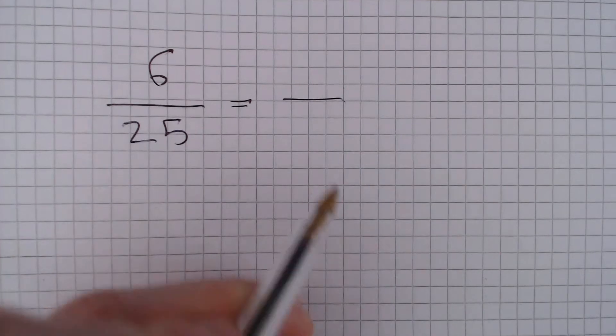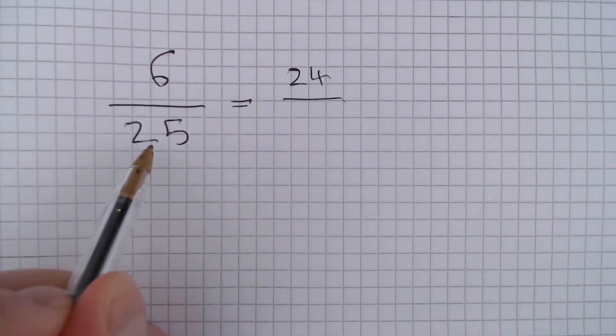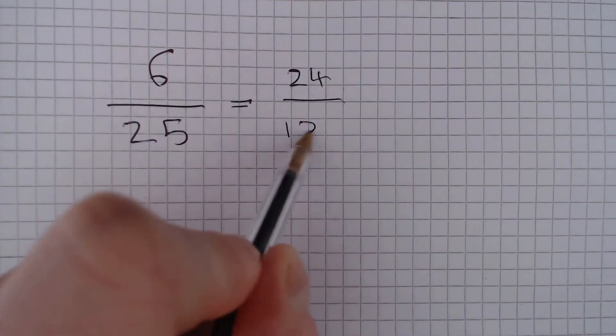So this is going to give us 6 times 4, which is 24, and 25 times 4, which is 100.